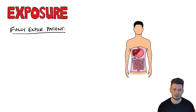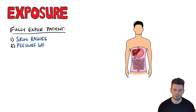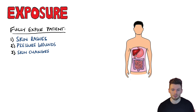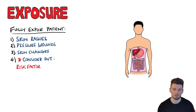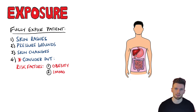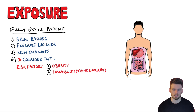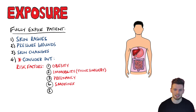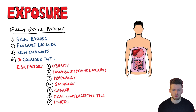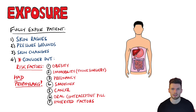Finally, E is for exposure, meaning complete exposure of the patient may be required to fully investigate — while maintaining their dignity. E also involves looking for skin rashes, pressure wounds, and skin changes, as well as an assessment for DVT (deep vein thrombosis). Risk factors include obesity, immobility, surgical patients, pregnancy, smoking, cancer, use of the oral contraceptive pill, and some inherited factors. Also consider whether the patient has been prescribed anti-embolic prophylaxis prior to this episode.